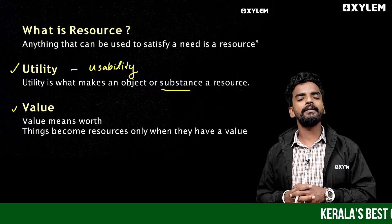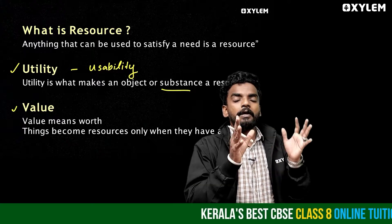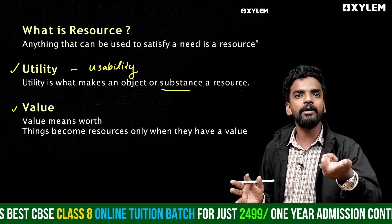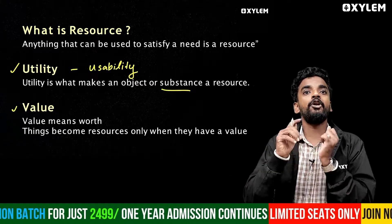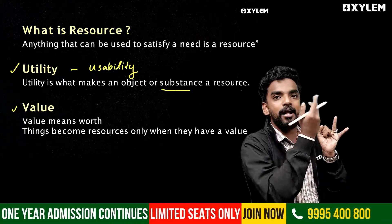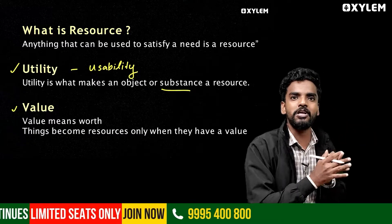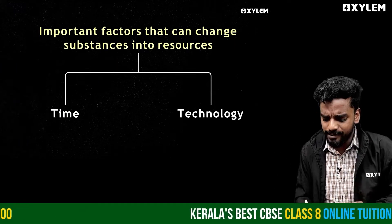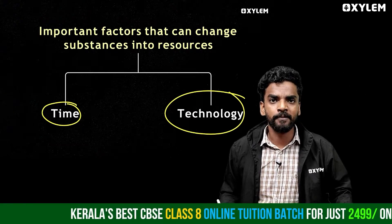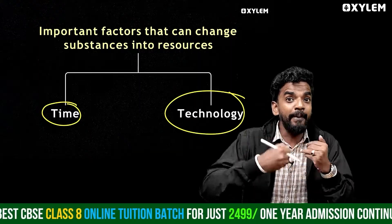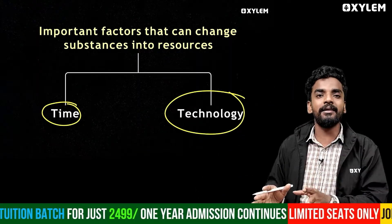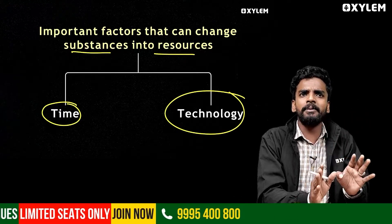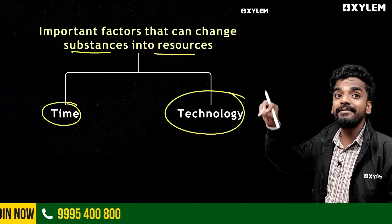When a substance has value and utility, it becomes a resource. For example, if you take clay and make a statue, that statue has value — you could sell it for a thousand rupees. The statue has a usage and can be put on exhibition. So when does a substance become a resource? It depends on two things: time and technology. With the right time and technology, a substance becomes a resource.